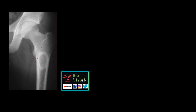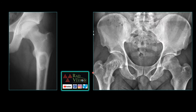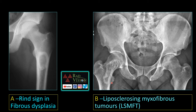The next case shows a radiolucent lesion with a ground-glass matrix surrounded by a thick, well-defined rim of cortex. The companion case shows a geographical lytic lesion with fat densities and a calcified matrix, plus a well-defined sclerotic rim in the intertrochanteric region of the femur. The first is the classical rind sign in fibrous dysplasia, and the second is a case of liposclerosing myxofibrous tumor, which typically occurs in the intertrochanteric region of the femur.